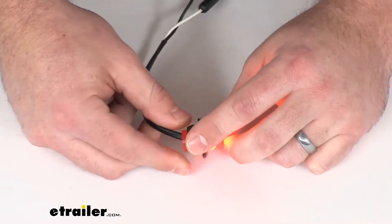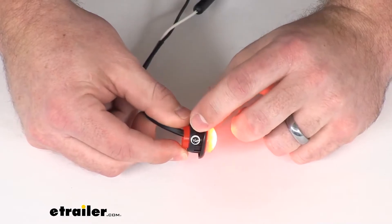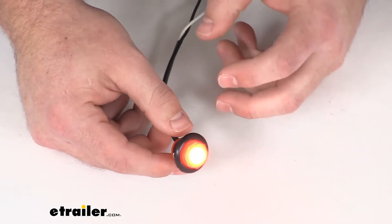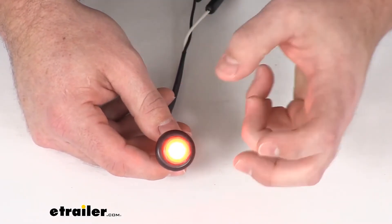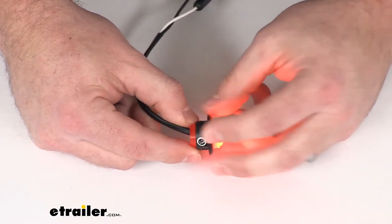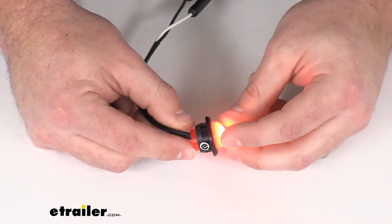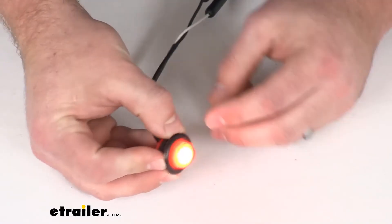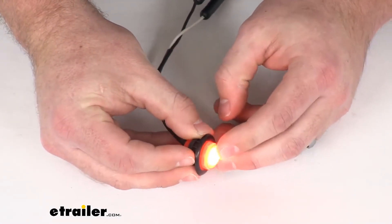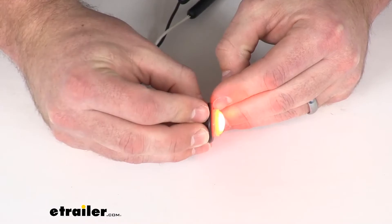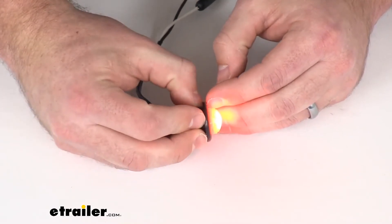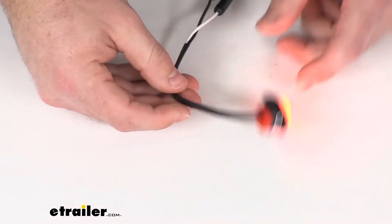You can see we do have this grommet here. This is going to allow us to have this recessed mounted, so you just have to drill a three-quarter inch hole and then slide this in, and then it will sit there on our trailer like so.